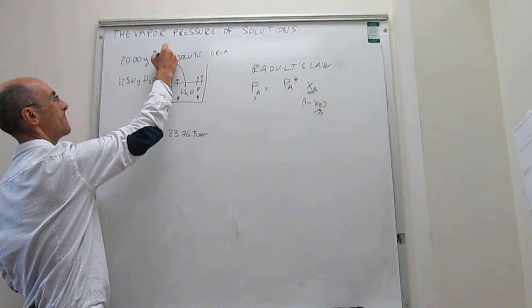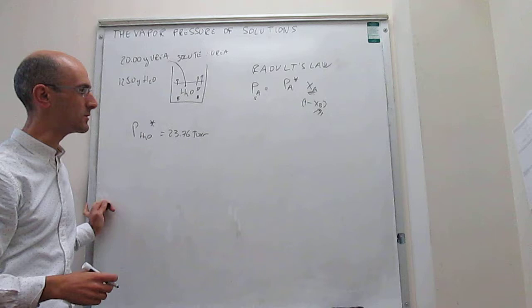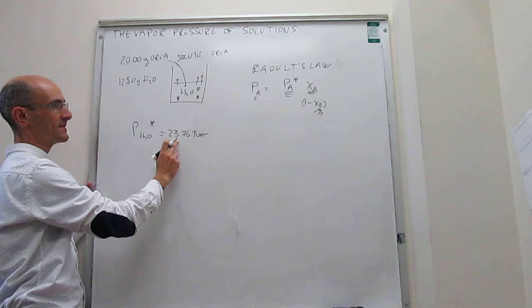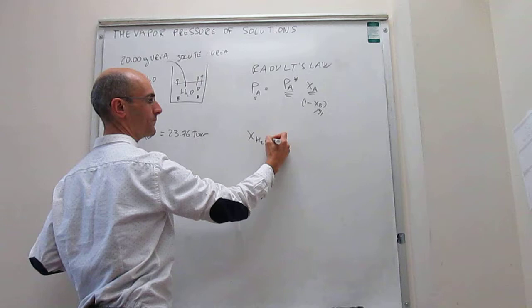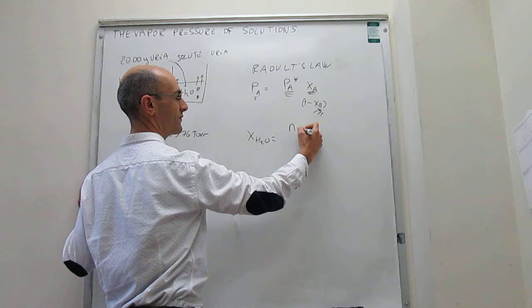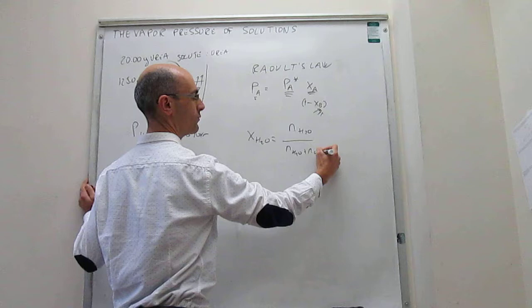And then the question would be calculate what the vapor pressure of that water would be in the solution. So notice that we know what the vapor pressure of water is when pure is this number. And then we simply need to calculate what the mole fraction of water would be once you add 20 grams of urea. So notice that the mole fraction is simply the number of moles of water over the number of moles total.